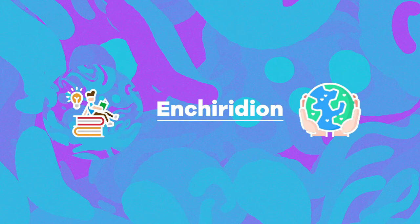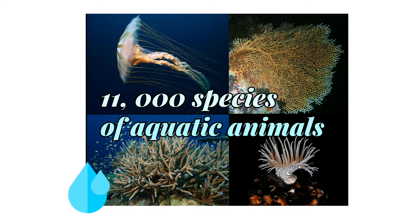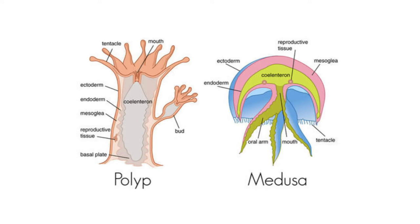Hi, welcome to Enchiridion. Following the description of the Snakelock's anemone, we will now take a look at cnidarians. Cnidarians, a group of over 11,000 species of aquatic animals found both in freshwater and marine environments, are characterized by cnidocytes, specialized cells that they use mainly for capturing prey.